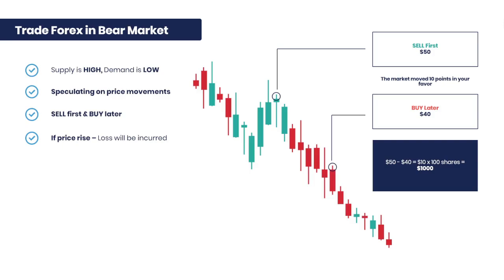The trading setups for bear markets must be aligned with the major trend, and in this case the major trend must be in the direction of a downward movement in order to profit from the bear market.